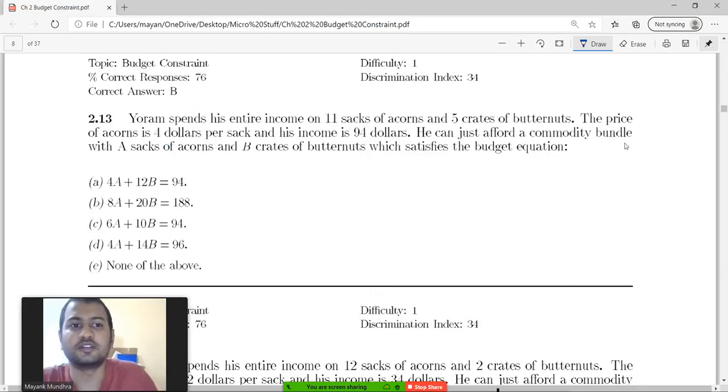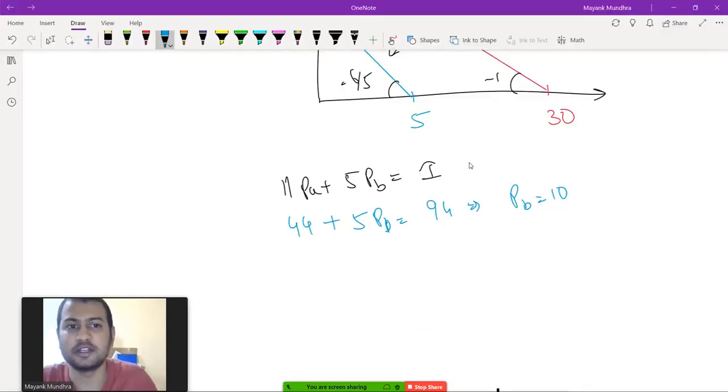He can just afford a commodity bundle with A sacks of acorns and B crates of butter nuts which satisfies the budget equation.